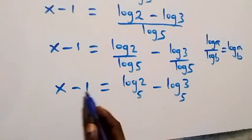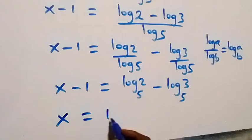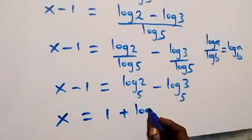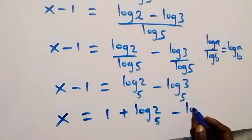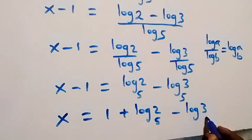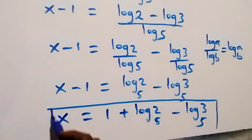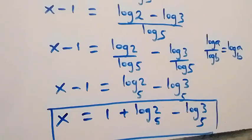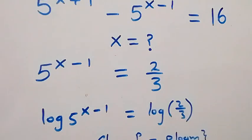Taking minus 1 to the other side it becomes plus 1, so x equals 1 plus log 2 to base 5, minus log 3 to base 5. This is the value of x in this given problem. Now let's check if this satisfies the original equation.